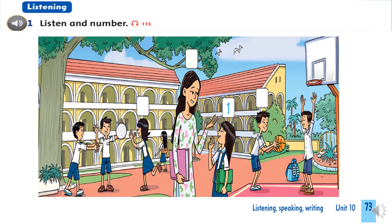What can you see in the picture? We can see a teacher and some students. So let's count and tell me how many students there are. There are 1, 2, 3, 4, 5, 6, and 7. There are 7 students.